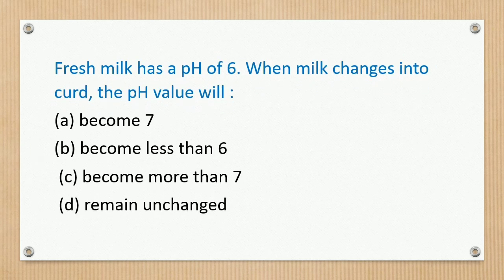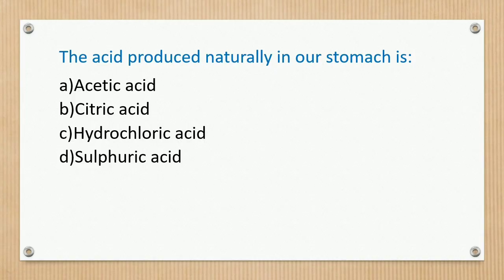Fresh milk has a pH of 6. When milk changes into curd, the pH value will become less than 6. The acid produced naturally in our stomach is hydrochloric acid.